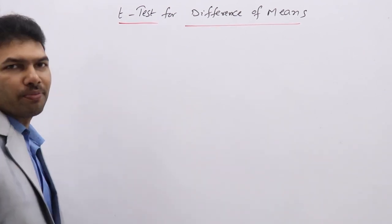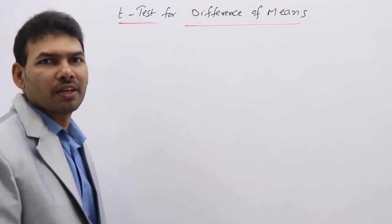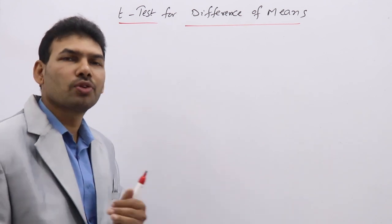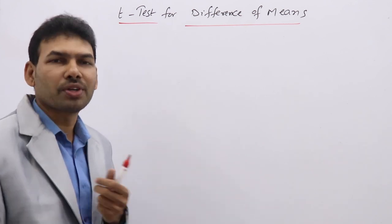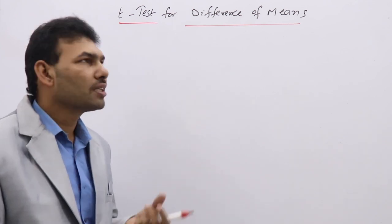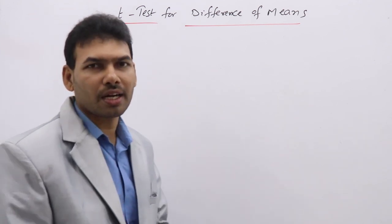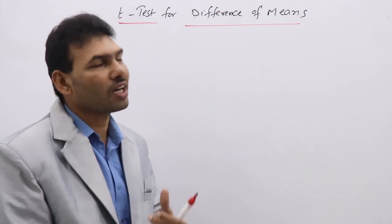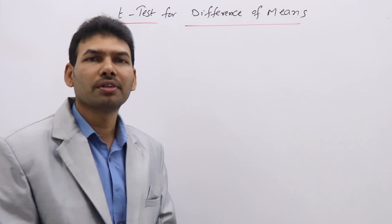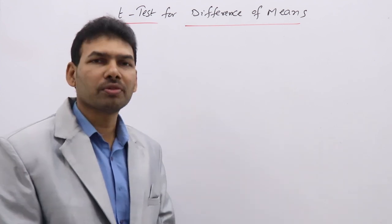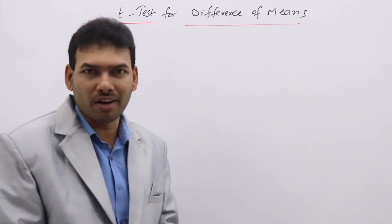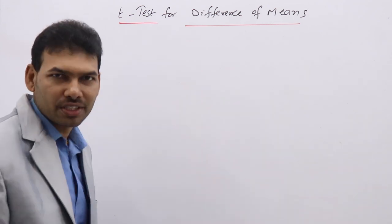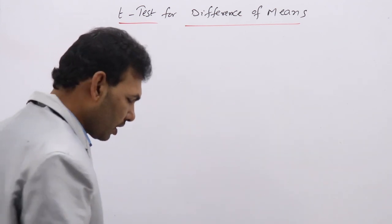T-test for difference of means. Whenever you have two samples with two means and standard deviations, to test whether the two samples have the same means or not — whether they are taken from a population with the same mean or not — we use the T-test for difference of means.